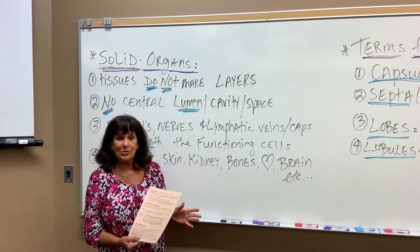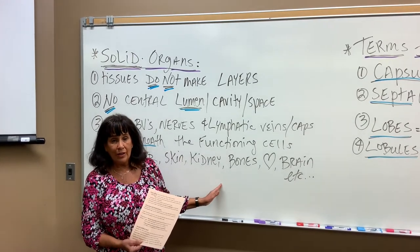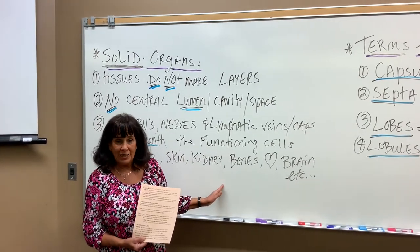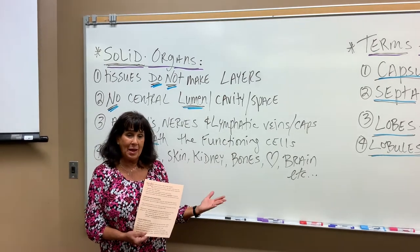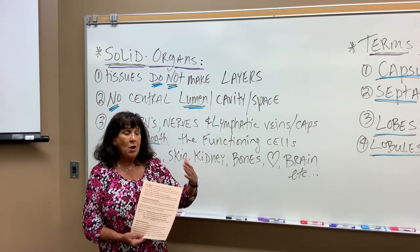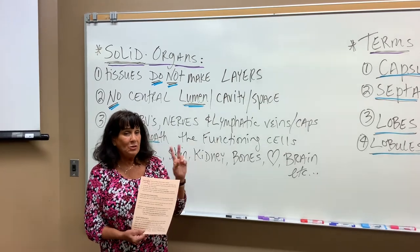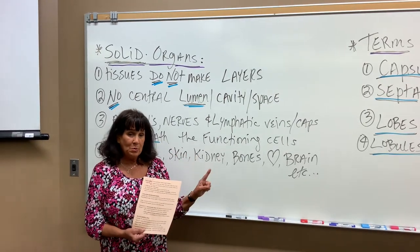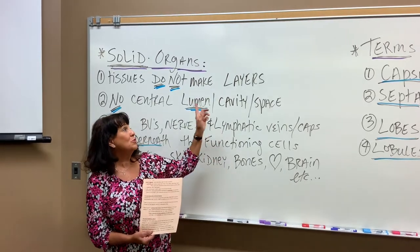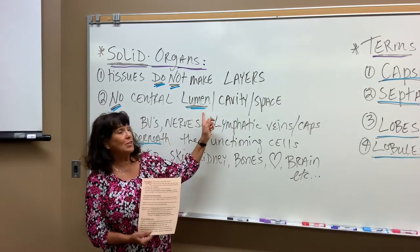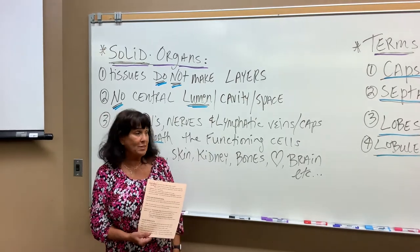As we go through the various systems, we will be pointing out what kind of organ each organ is. If I ask on a lab test or lecture test what kind of organ is this, you have only two answers: tubular with a central lumen, or a solid organ with no central lumen and tissues that do not make distinctive layers.